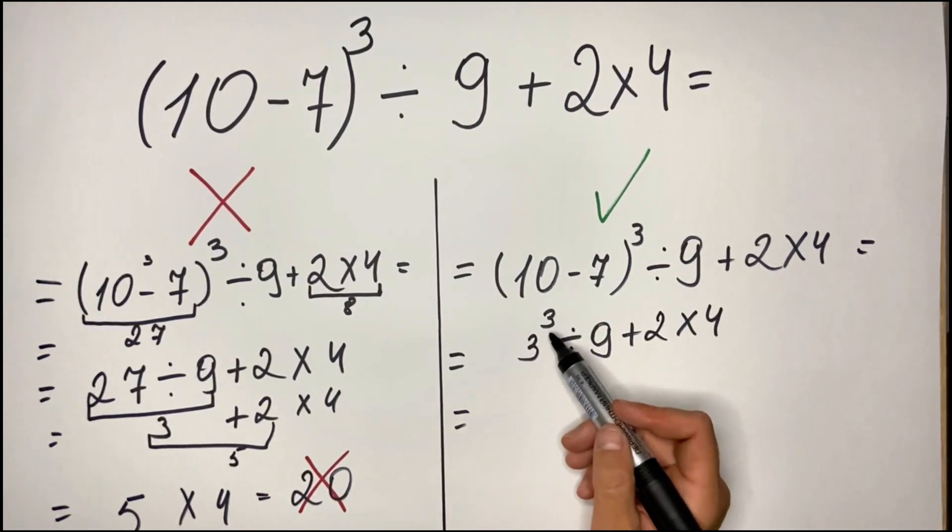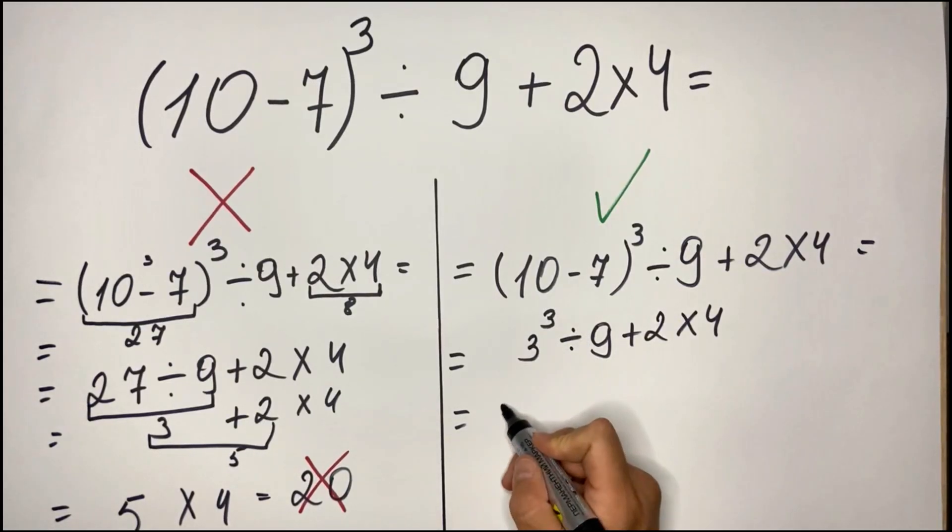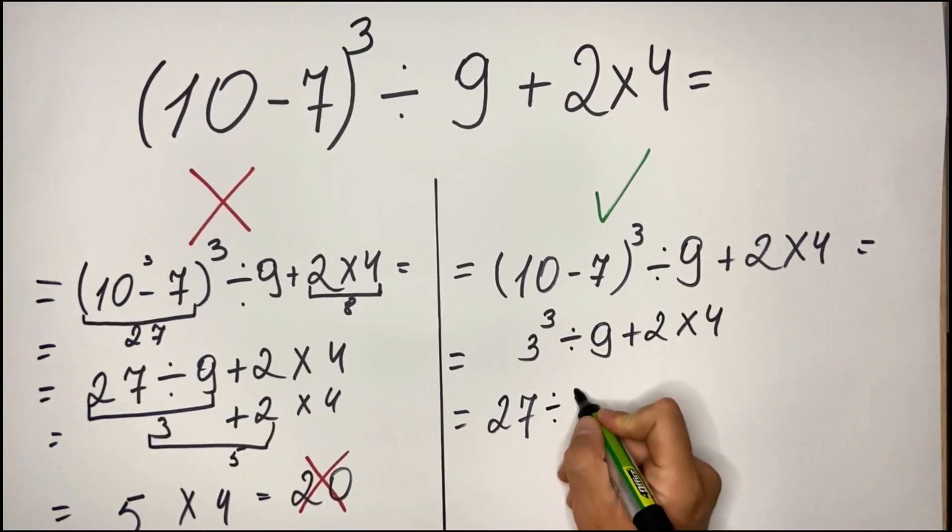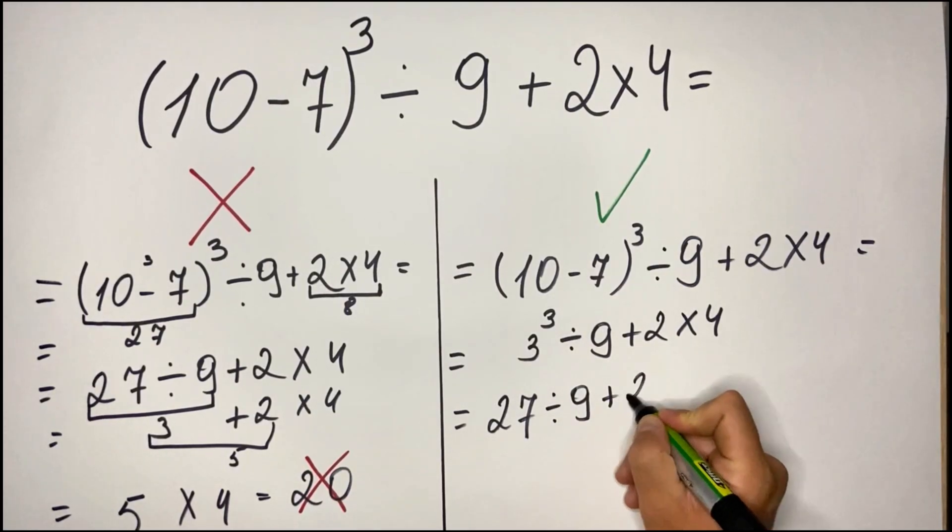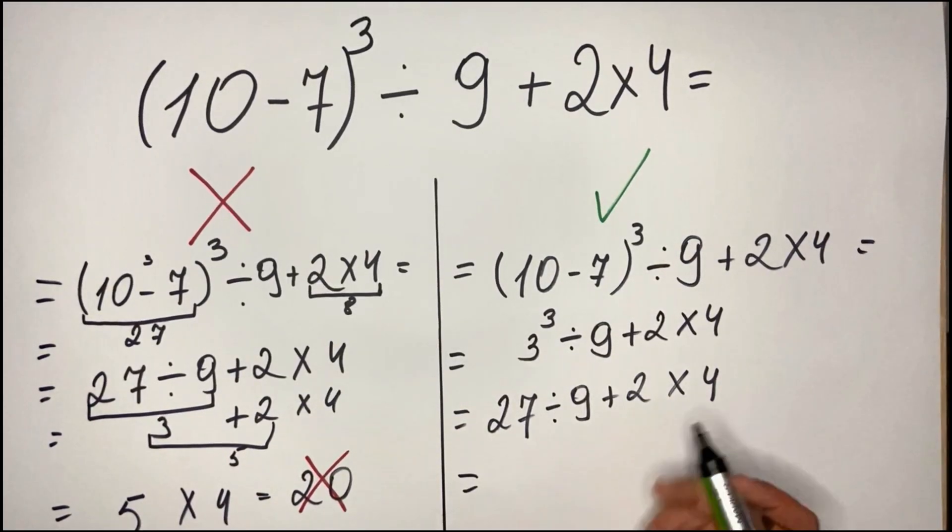So now what we see, the cube also, then we have the exponents, so we have 3 cubed which is 27 divided by 9 plus 2 multiplied by 4. So in this situation now what we have?